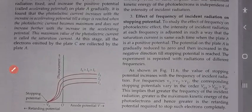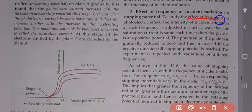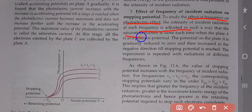To study the effect of frequency on the photoelectric effect, the intensity of incident radiation at each frequency is adjusted in such a way that the saturation current is the same each time when plate A is at a positive potential.